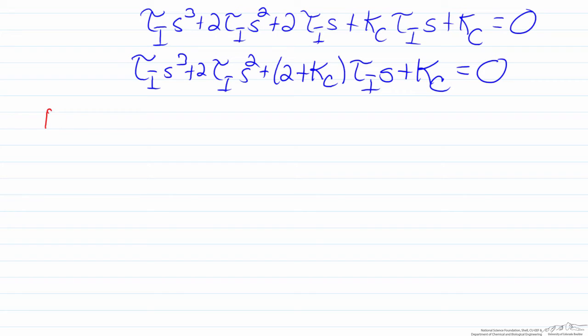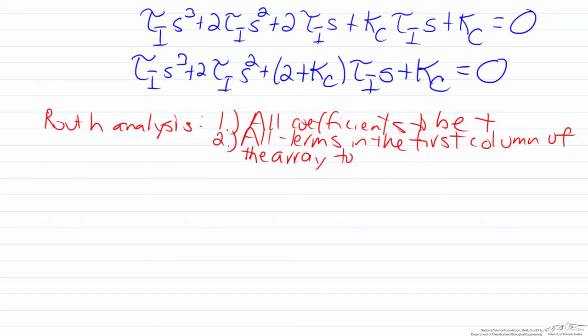From here we'll do a root analysis of the characteristic equation, and recall that a root analysis requires all coefficients to be positive and all terms in the first column of the array to be positive. As we look at our system here we can see that from the s cubed term and the s squared term we end up with the same result saying that tau I must be greater than zero. Additionally if we look at the constant term we see that Kc must be greater than zero. The s term will not provide us much more information because we already know that tau I must be greater than zero, which dictates that the two plus Kc term must also be greater than zero.